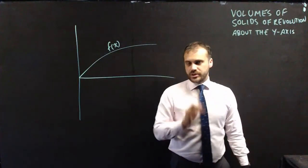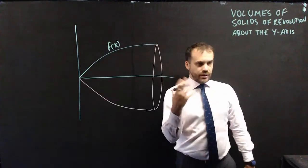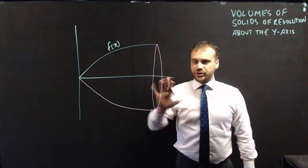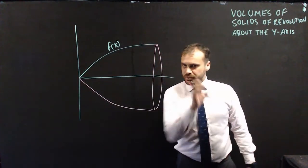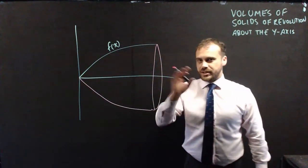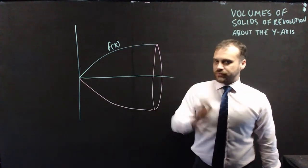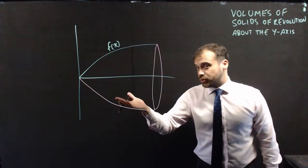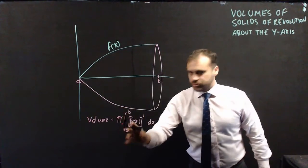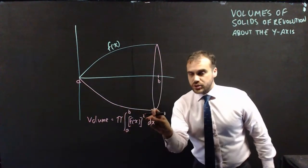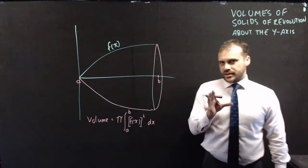If you're watching this video, you already know what a solid of revolution is. It's an object formed by rotating a function around a line. The one you'll be familiar with is rotating around the x-axis, and you find that volume using the following formula: pi times the integral between a and b of f(x) squared with respect to x.